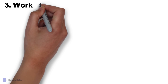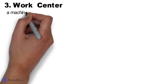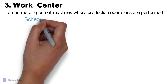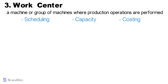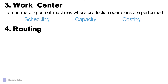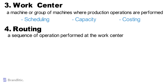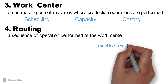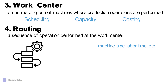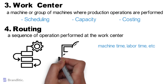Third is the Work Center. A work center is a machine or a group of machines where production operations are performed. They are used in task list operations or routings and contain data for scheduling, capacity, and costing. Fourth is Routing. Routing is a sequence of operations performed at the work center. It also specifies machine time, labor time, etc. for the execution of operations, and is used for scheduling of operations and plays an important role in standard cost calculation of a product.